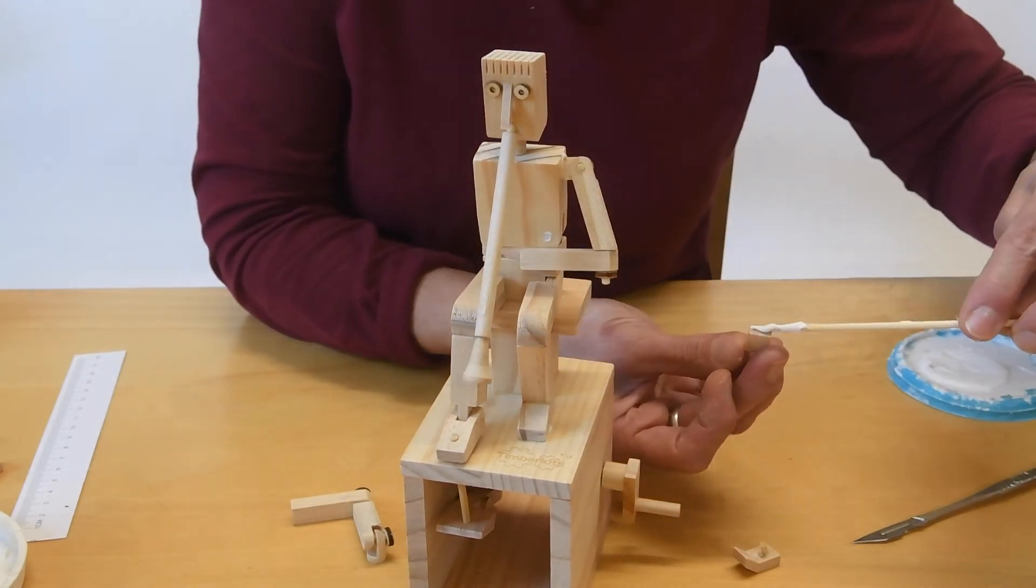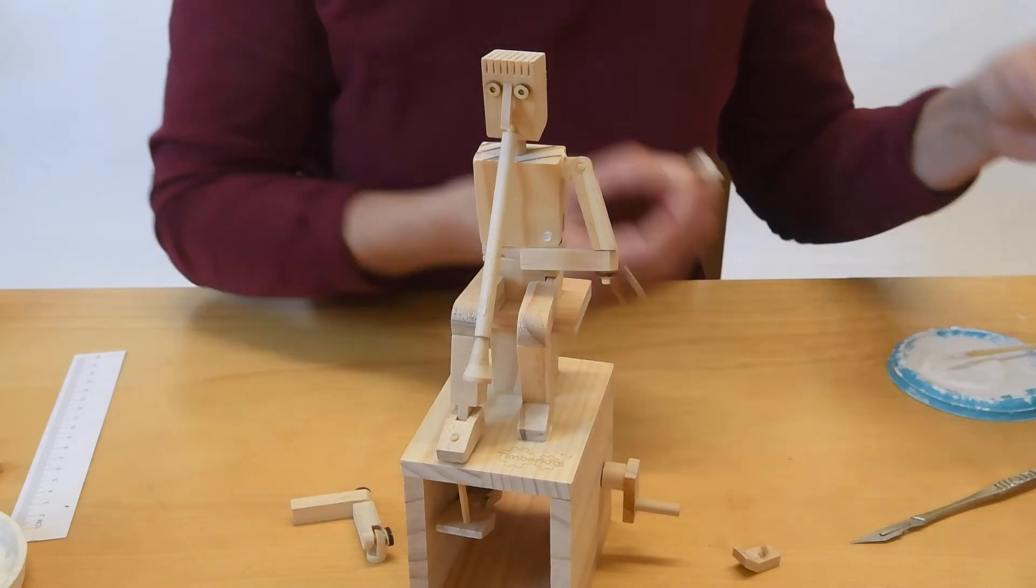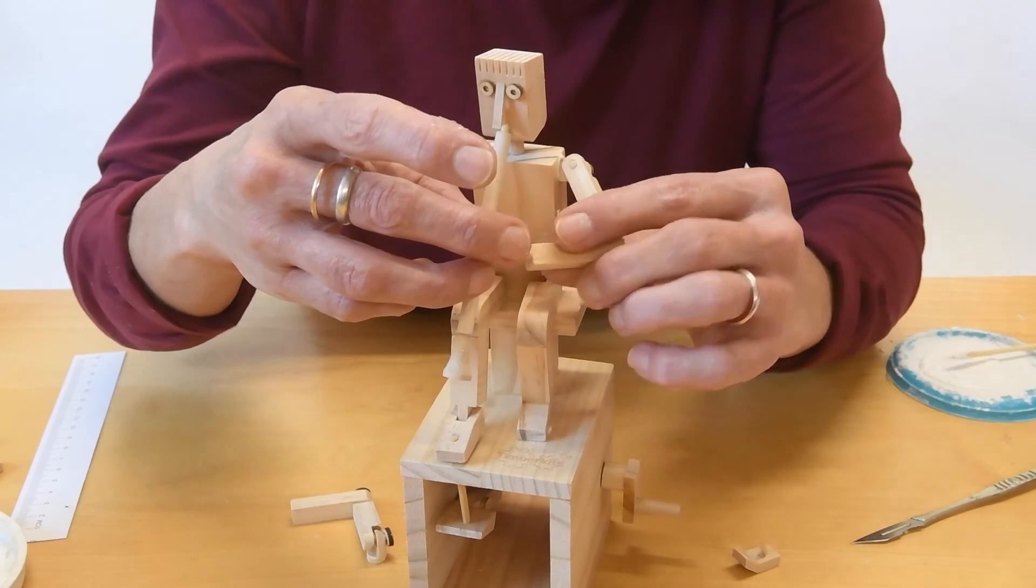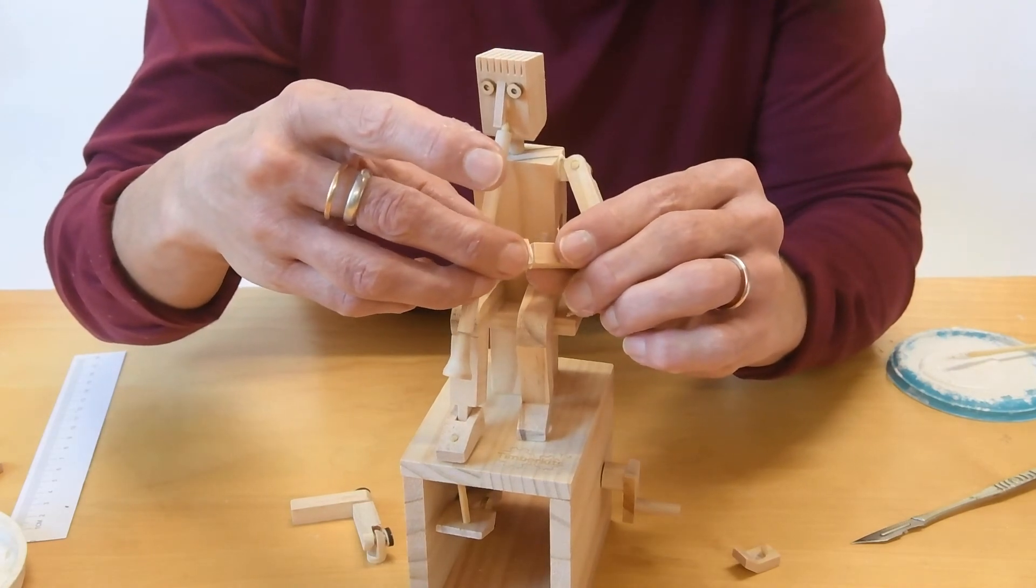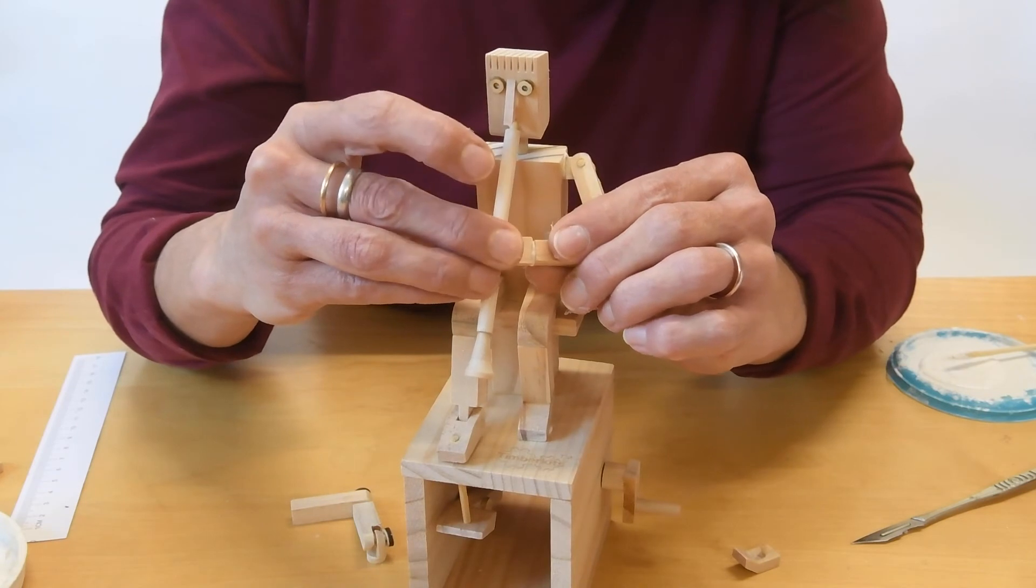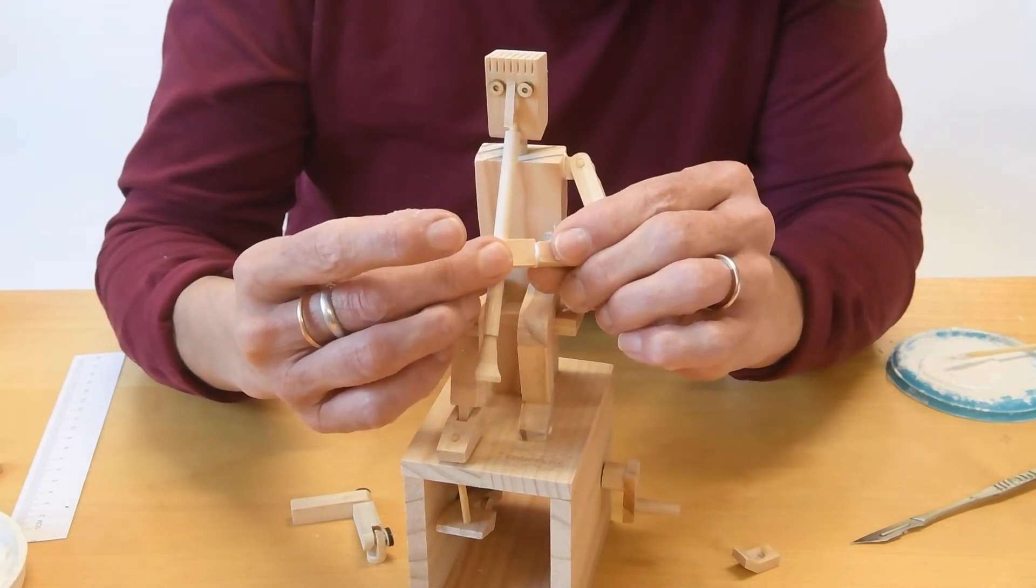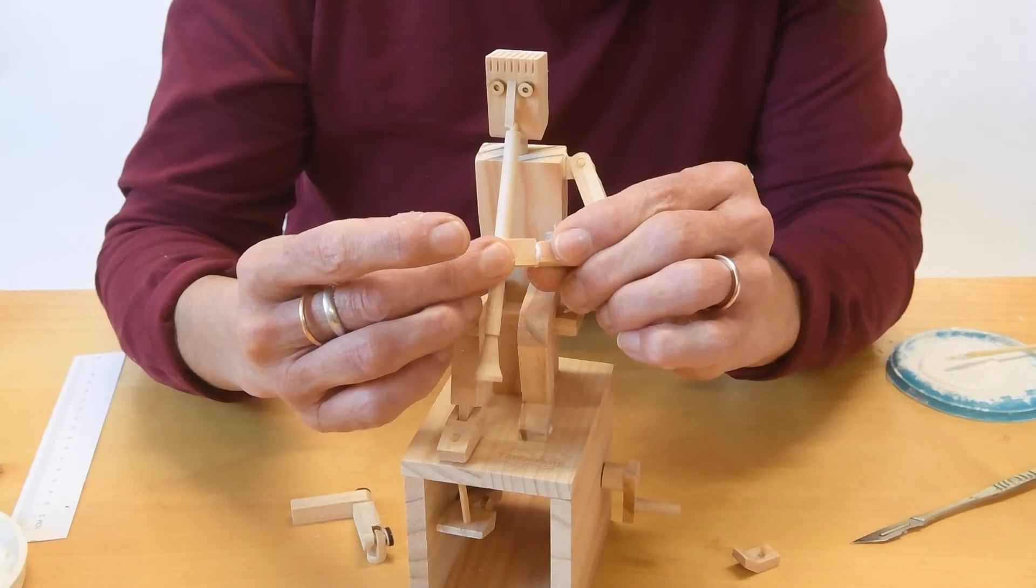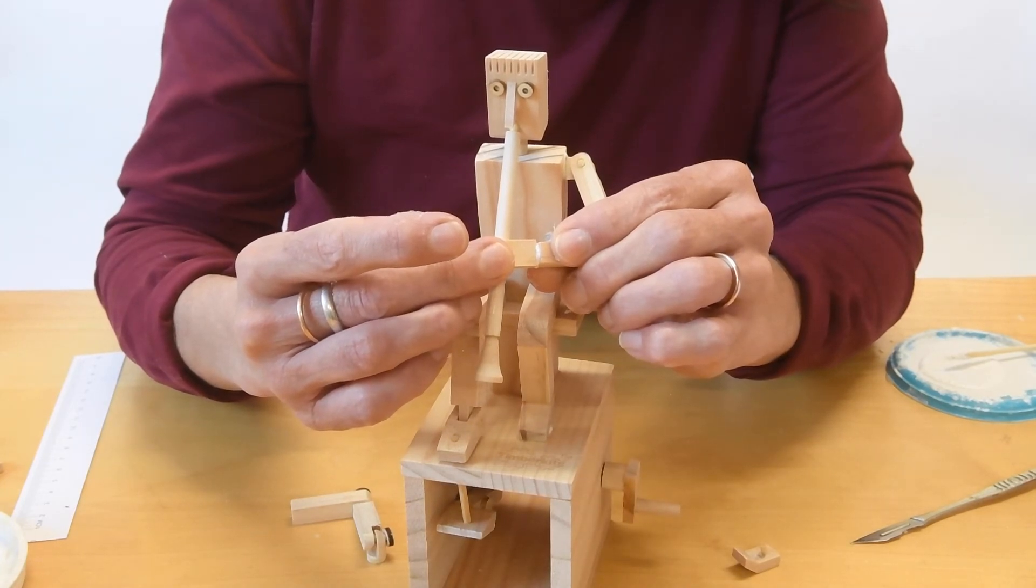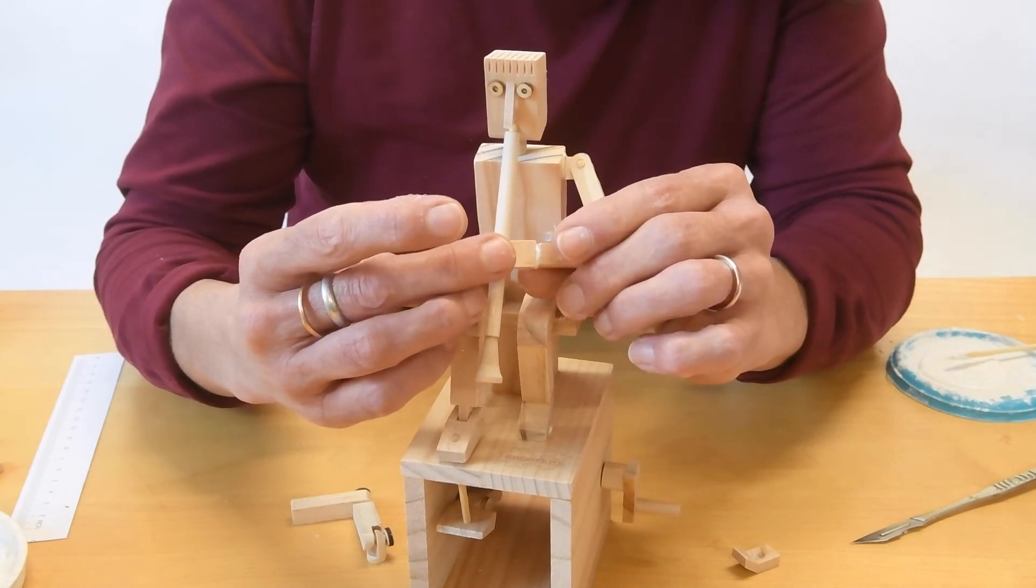And then glue the end of the hand and inside the palm and the thumb. Find an angle that sits comfortably there on the instrument and on the wrist. I'm just going to hold that for a minute. Make sure the glue is held.